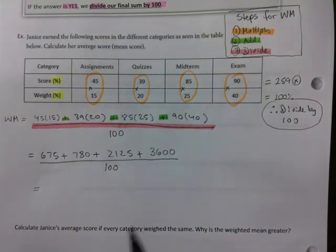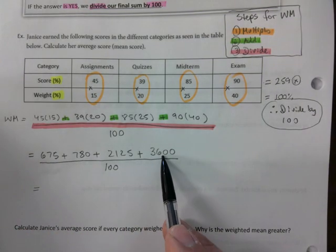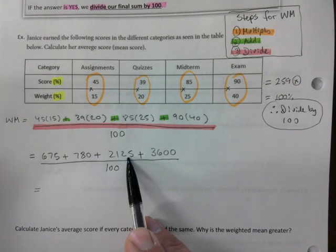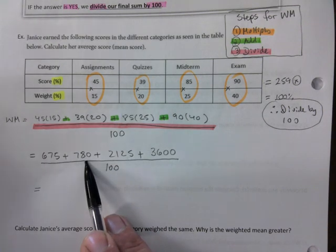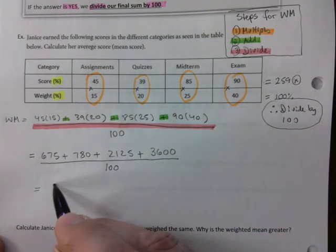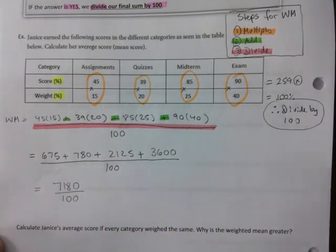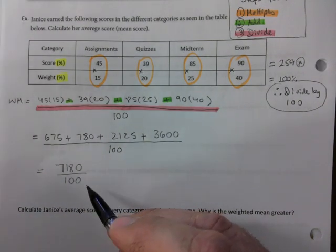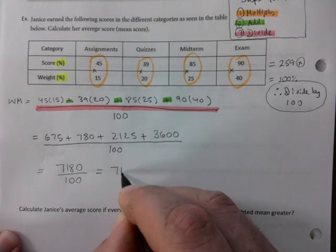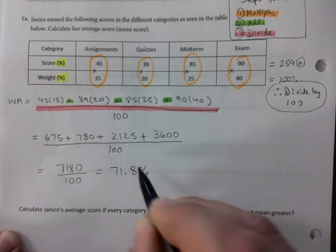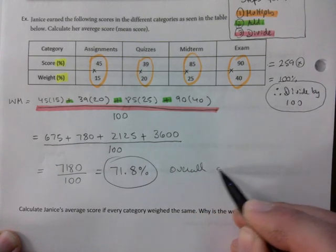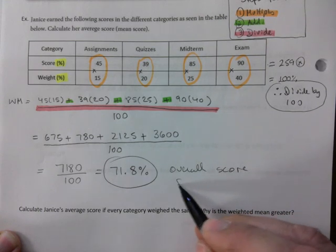I'm going to add all of this up. I have this on my calculator already, so I'm just going to go backwards. 7180. 7180 divided by 100. And now it's just a matter of dividing this by 100. The decimal is going to shift two places. And that ends up being 71.8%. This is the overall score for Janice.